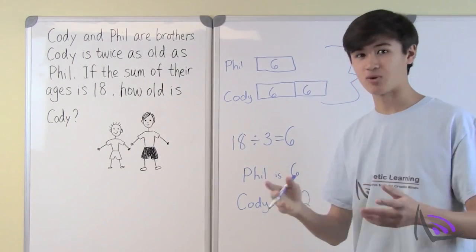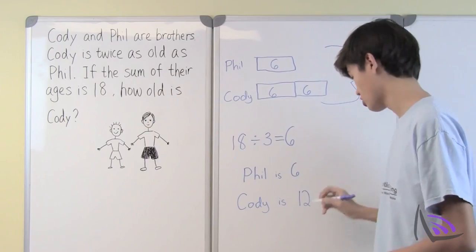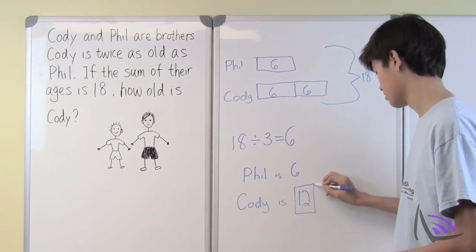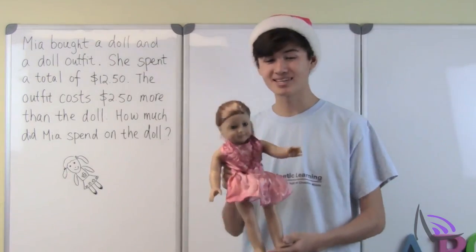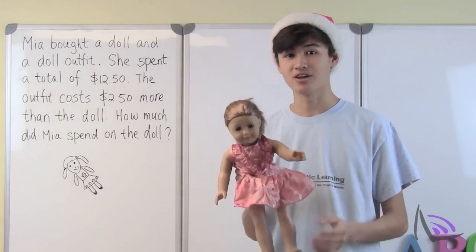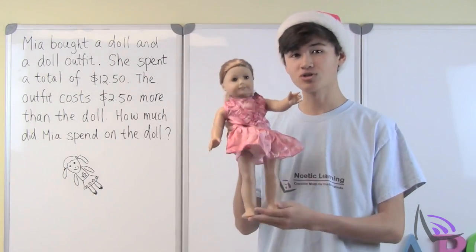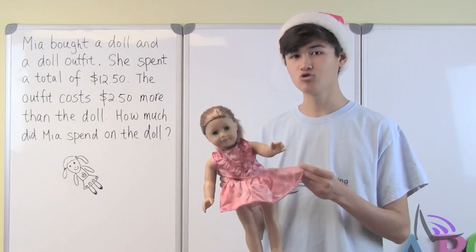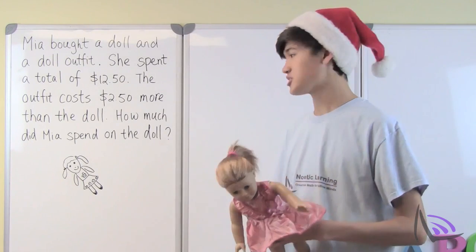The question asks how old is Cody — Cody is 12 years old, and we've solved the problem. Now for the next problem: it's Christmas time and Mia decided to buy a doll and a doll outfit for her sister. The total was $12.50, and the outfit cost $2.50 more than the doll.